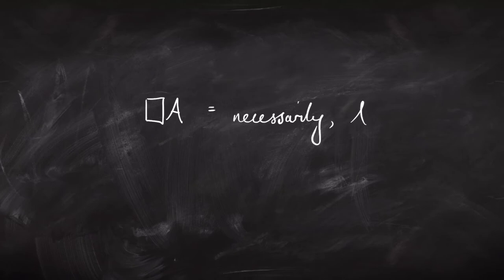Modal logic is where we add a box and a diamond to our language. Usually we take box to mean 'necessarily' and diamond to mean 'possibly,' but they can mean loads of different things — stuff to do with time, knowledge, belief. Let's just keep it as necessarily and possibly for the time being.